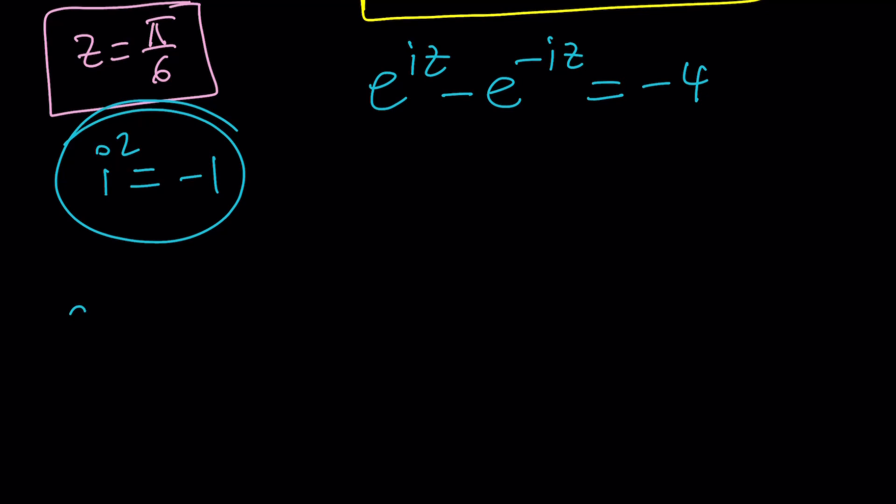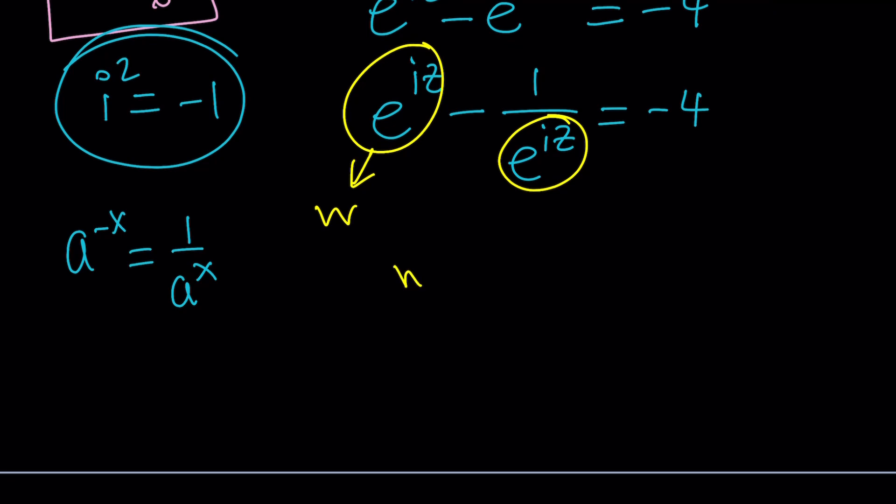The next step is changing e to the power of negative iz. If you have a to the power of negative x, we can write it as 1 over a to the power of x. And that's true for complex numbers too. So we can write e to the power of negative iz as 1 over e to the power iz. And the right-hand side is not going to change. But this is really cool because if we use substitution then we have the same thing twice, reciprocal obviously. So if we call this w, then we're going to get w minus 1 over w equals negative 4. And that's just awesome because we can turn this into a quadratic equation.